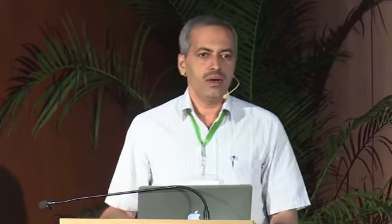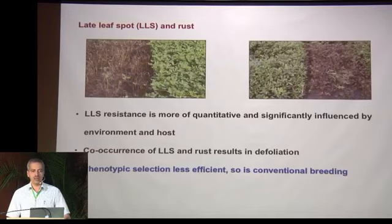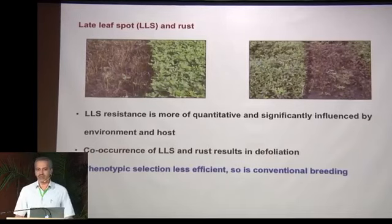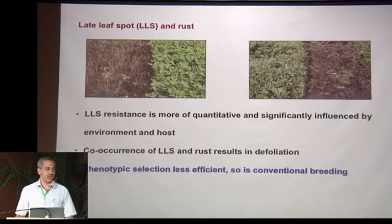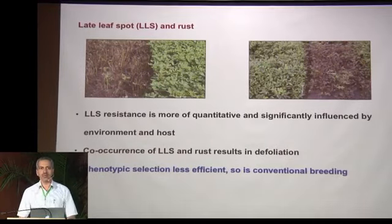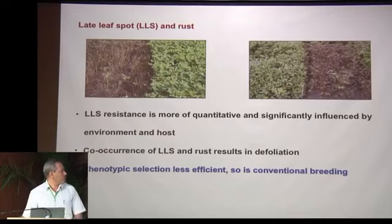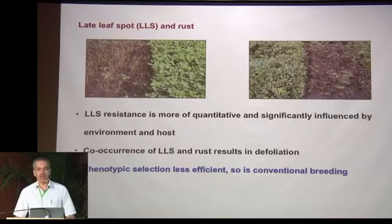The work we have done in groundnut mainly deals with two traits. When you talk of a crop, you always talk of traits. The traits we are looking at are foliar disease resistance — which in groundnut refers to early leaf spot, late leaf spot, and rust disease — and also high oleate trait. LLS resistance is more quantitative and significantly influenced by environment and host. We are working mainly on LLS and rust.